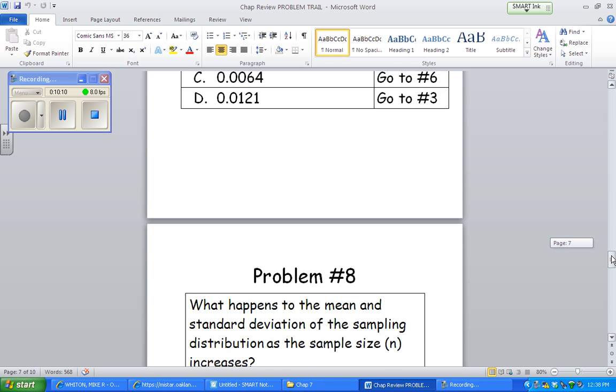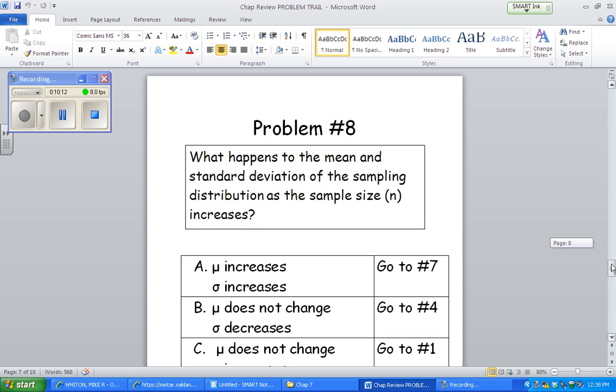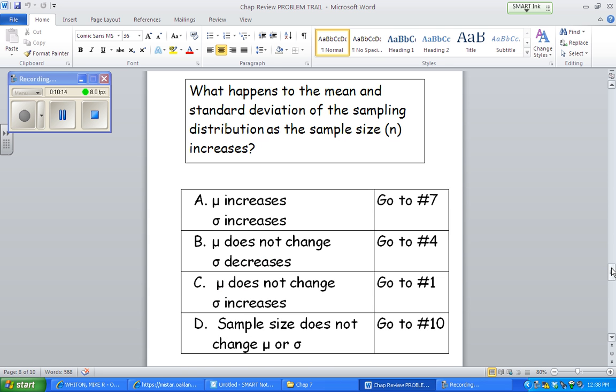Okay, number 8. What happens to the mean and the standard deviation of the sampling distribution as the sample size increases? Okay, so as the sample size increases, the mean is the mean. Okay, that's not changing. That's whatever the population's value is. So, it doesn't matter how big your sample is. But the standard deviation will decrease.